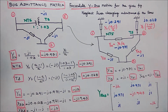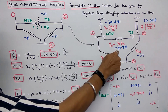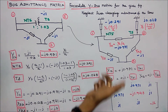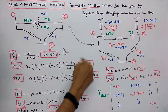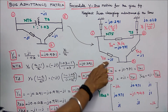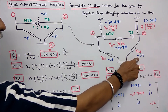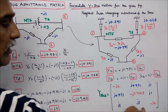Next, the off-diagonal elements. Y12 equals negative of (minus J0.971), which is plus J0.971, and Y21 equals Y12. Y31 equals negative of (minus J1), which is plus J1. Y23 equals negative of (minus J1), which is plus J1.